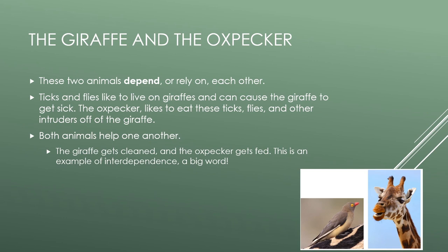Let's think about the giraffe and the oxpecker. The oxpecker is a friend to the giraffe. The oxpecker likes to eat ticks and flies and other intruders off of the giraffe. So both animals help one another. The giraffe gets cleaned and the oxpecker gets fed. This is an example of interdependence.